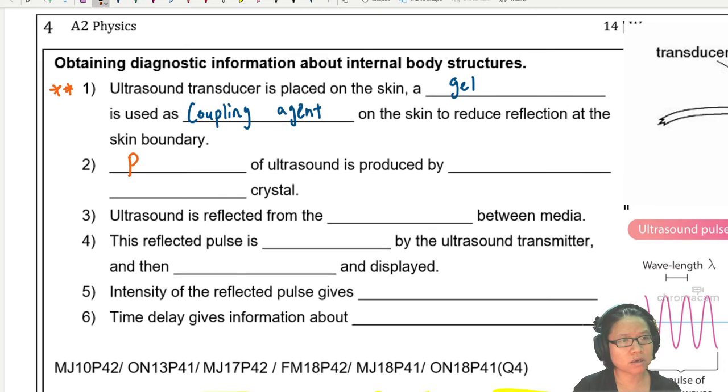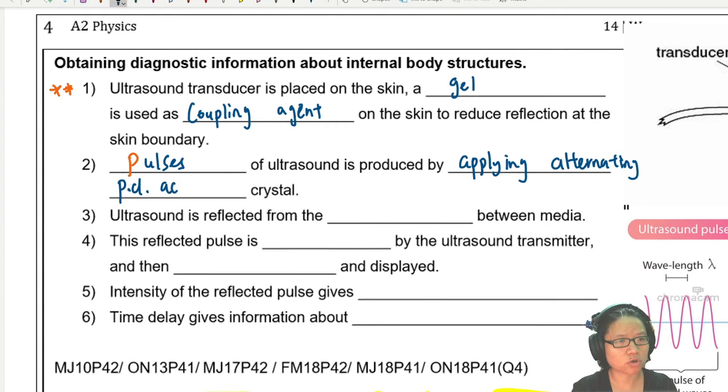Pulses of ultrasound is produced by applying - what do we apply to the crystal? Alternating electric field. Remember the first essay? We put alternating current to vibrate or to stretch and compress the crystal. So this is done by applying alternating potential difference across the quartz crystal in the transducer.